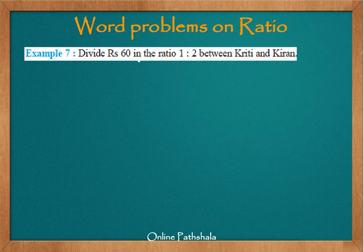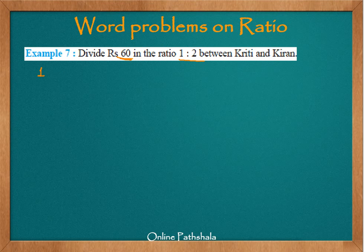Let us look at an interesting example of ratio. We have to divide rupees 60 in the ratio of 1 is to 2 between Kirti and Kiran. What does dividing a quantity in some particular ratio mean? Looking at 1 is to 2 — this is the lowest form of the ratio — it means that for every 1 rupee given to Kirti, we have to give 2 rupees to Kiran. So that is what we call 1 is to 2.